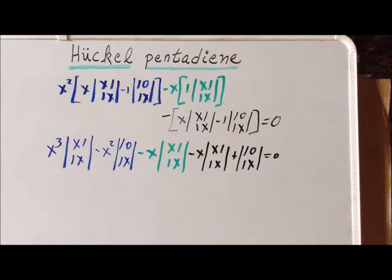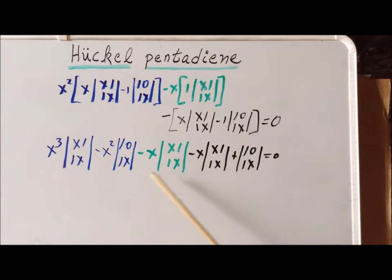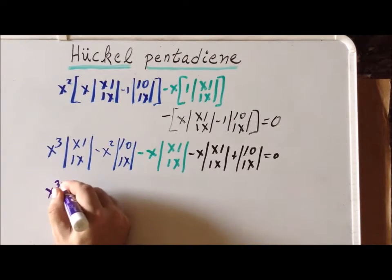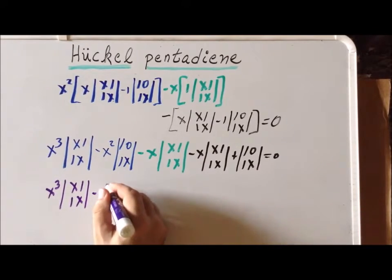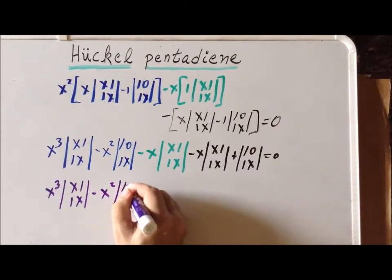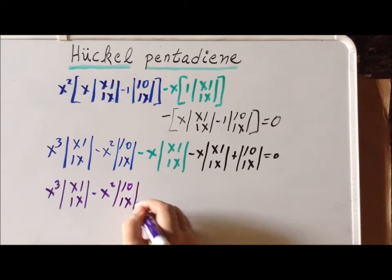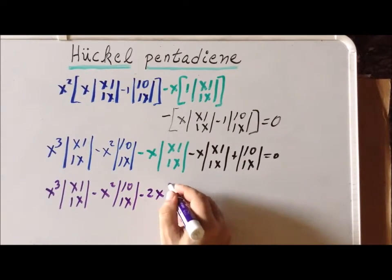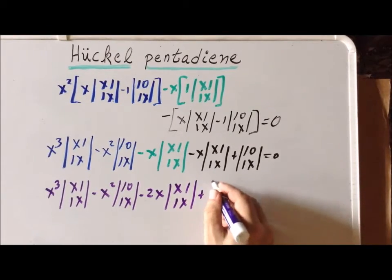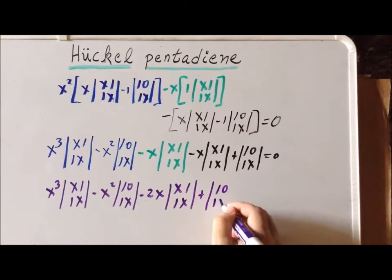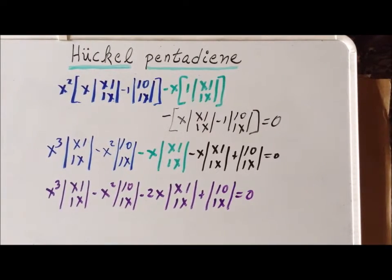We note that two matrices (x, 1, 1, x) appear with the same coefficient of minus x, so we can combine them into a single determinant. The whole expression becomes: x cubed minus x squared (1, 0, 1, x) minus 2x times (x, 1, 1, x) plus (1, 0, 1, x), all equal to zero.